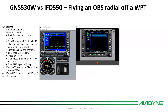In this video we're going to compare the 530W to the 550 and the procedure of how to fly an OBS radial off of a waypoint. We're at McClellan Airport — we're going to enter the McClellan VOR as a waypoint, and then in OBS mode dial in the 90-degree radial to fly outbound off of that.